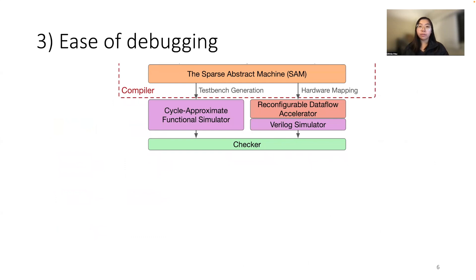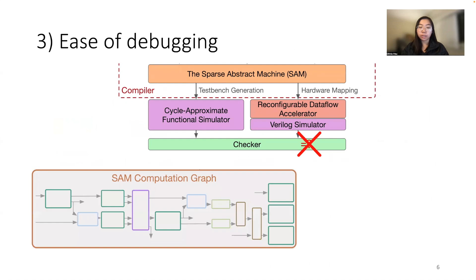The third benefit we found is the ease of debugging. As I alluded to previously, we have this hardware verification infrastructure. Let's see what happens when we check between our CGRA and our functional simulator. If there's a mismatch in the checker process, we can look at the SAM graph and the functional simulation at the abstract machine level.